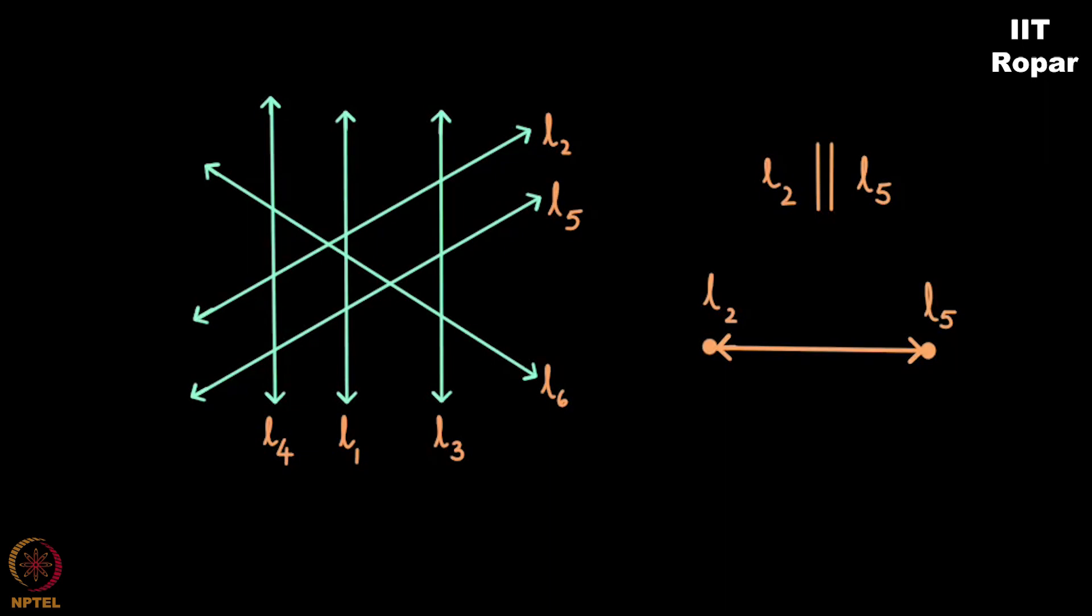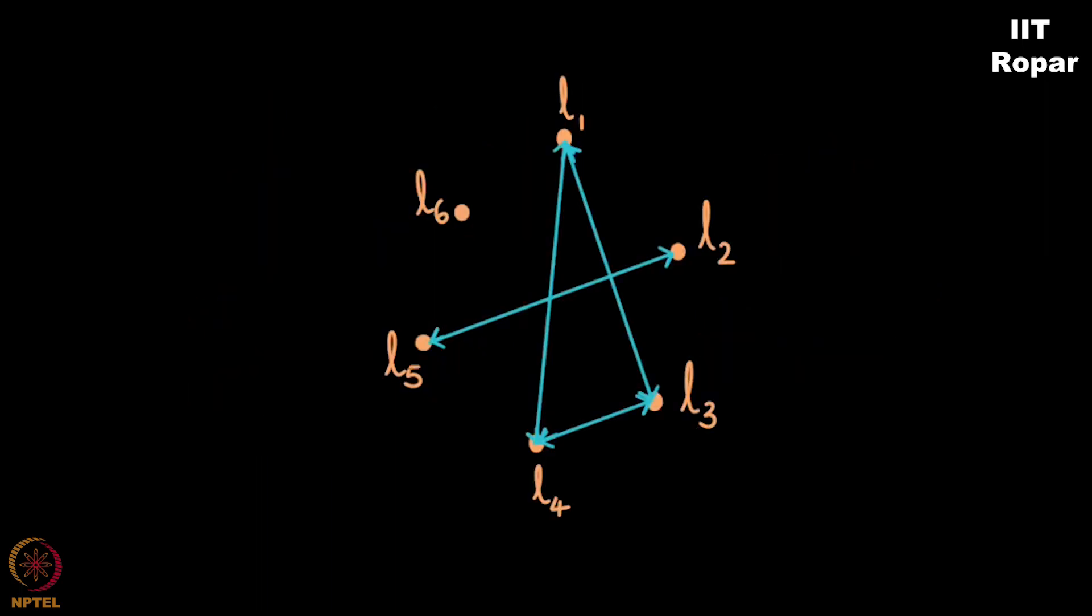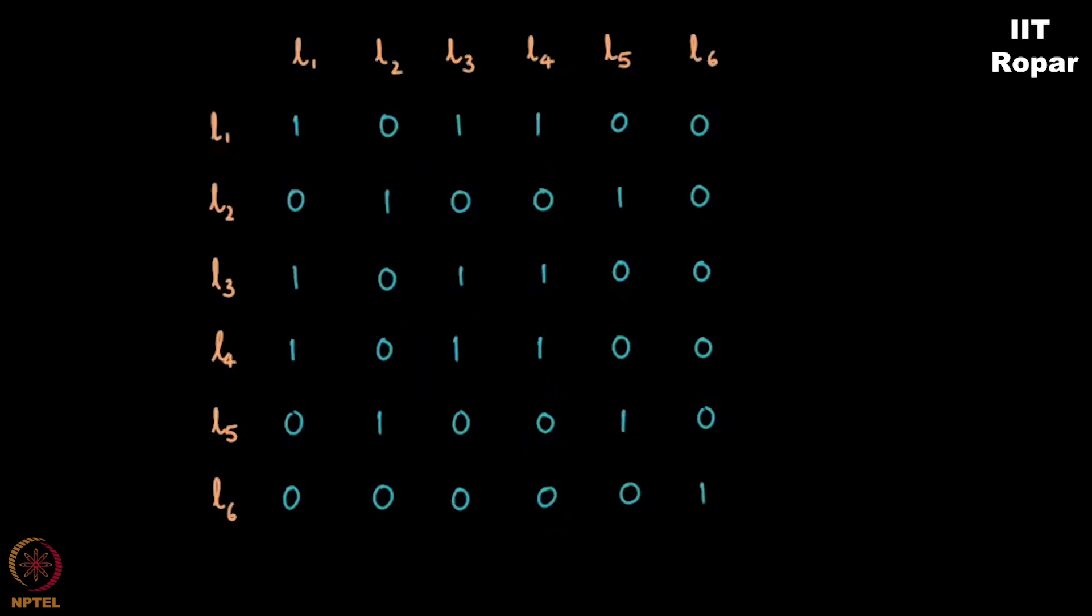The graph will look like this and the corresponding matrix, let me populate the corresponding matrix, there will be 1s this way. You can pause the video and maybe check if I am right.